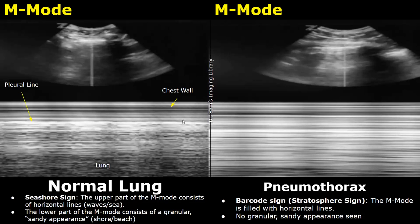This is the lung, and the interface between the horizontal lines and the granular sandy areas is the pleural line. In a pneumothorax, the seashore sign is replaced by a barcode sign, also called a stratosphere sign — the granular sandy areas are all replaced by horizontal lines. Thank you so much for watching; please subscribe and stay tuned for more imaging videos.